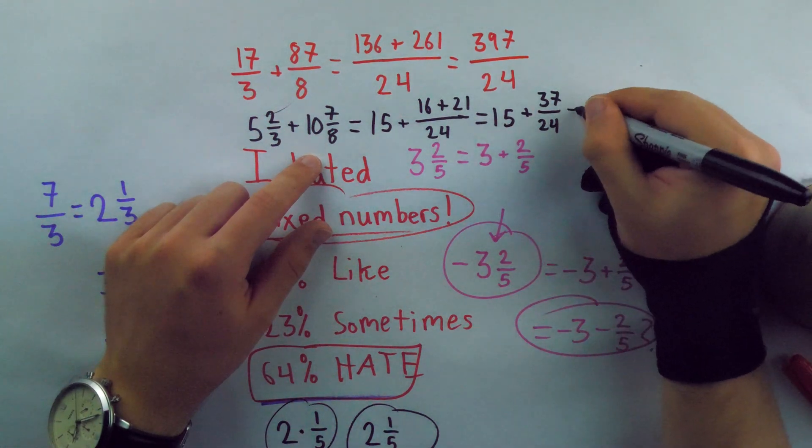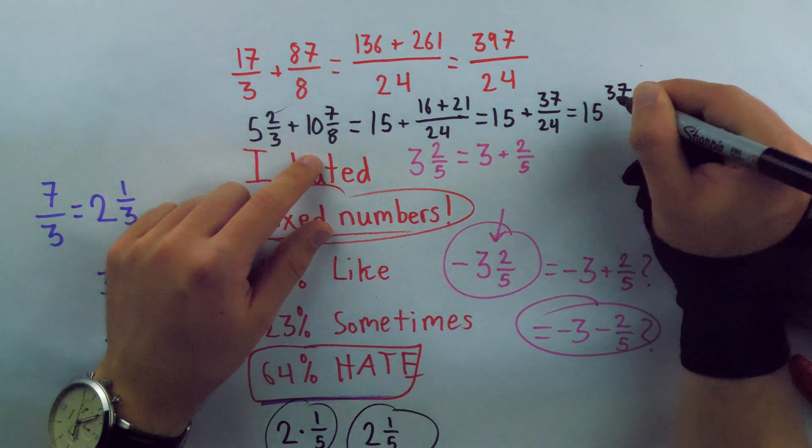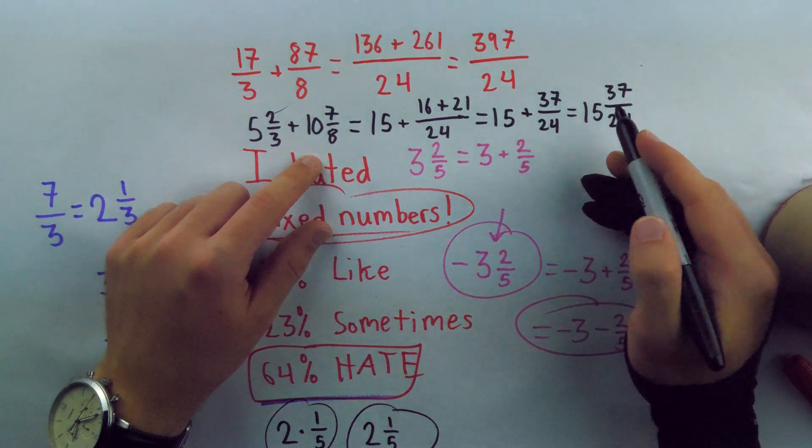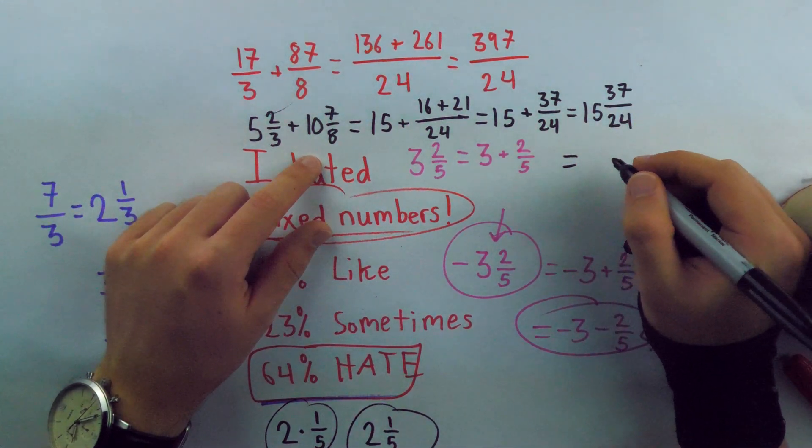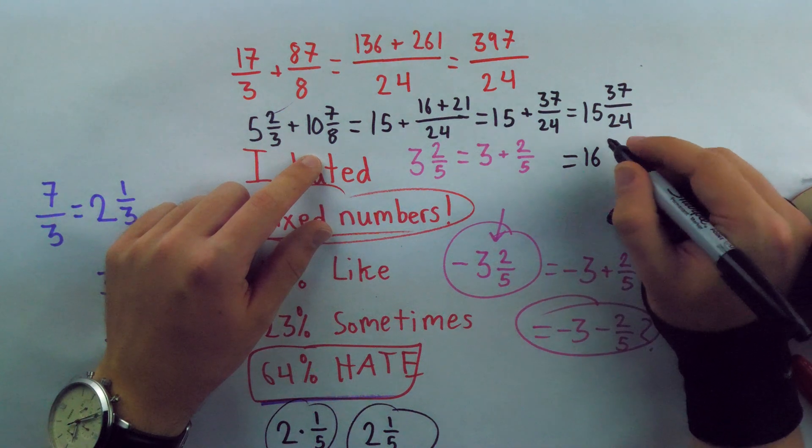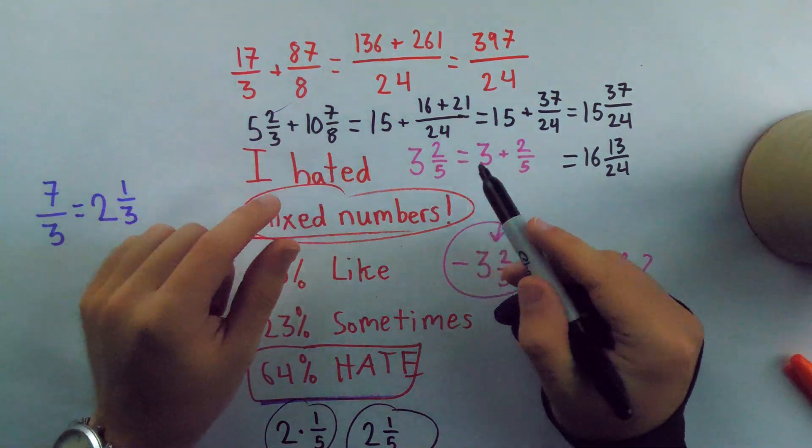And so then I have 15 plus 37/24. And then if I like, I can turn this into mixed number notation and write it as 15 and 37/24. Oh, but we actually see that there's another whole there. 24 goes into 37 once. So that brings me up to 16 with 13 left over. 13/24.